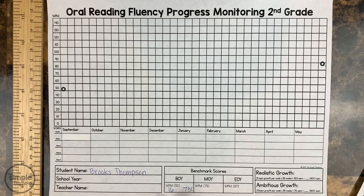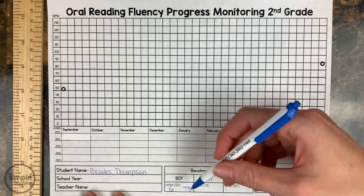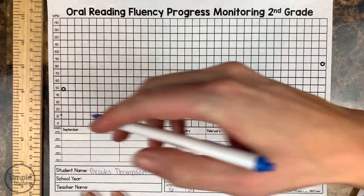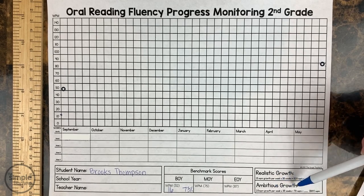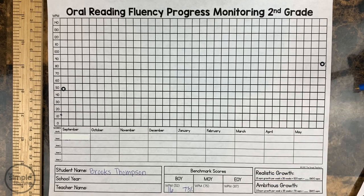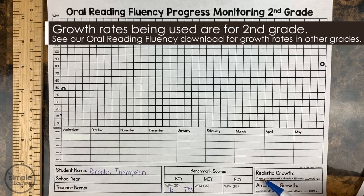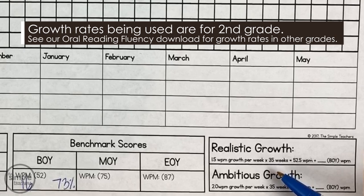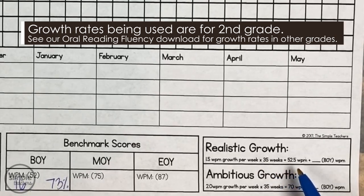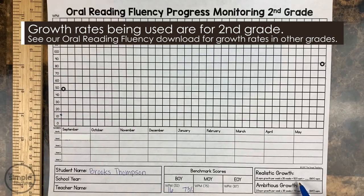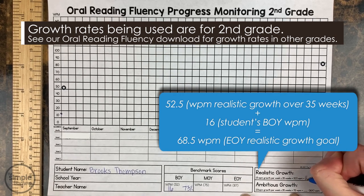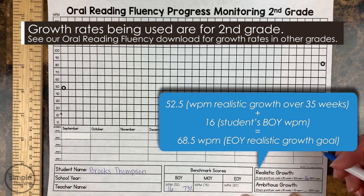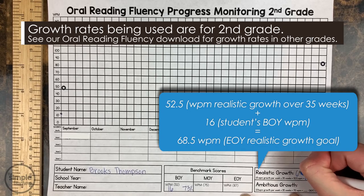After you know the beginning-of-year benchmark, we need to plot their realistic growth line and their ambitious growth line. First, I mark where they came in — a little dot at 16 words per minute. Then I mark where realistic and ambitious growth will be. Using math: 1.5 words per minute growth per week times roughly 35 weeks in a school year equals 52.5 words per minute. So you add 52.5 to their initial 16 words per minute.